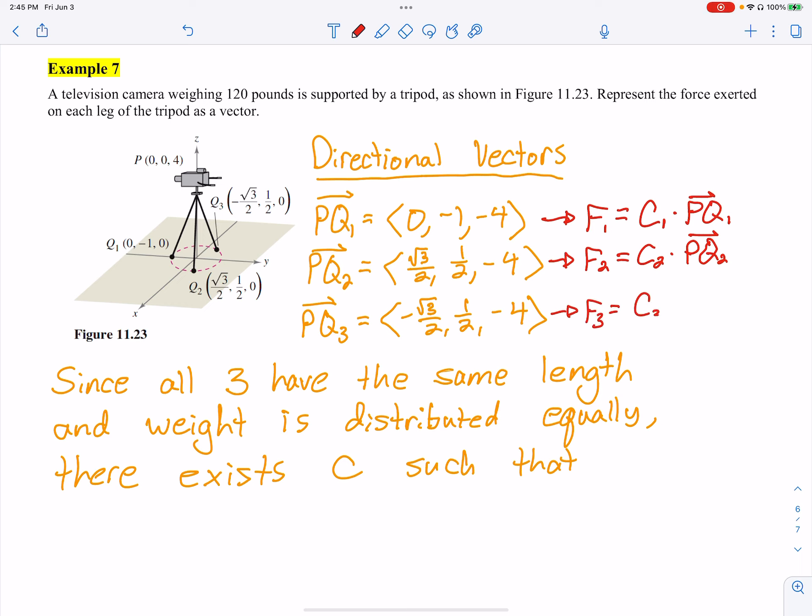All three tripods, I got some kind of force being put down in that direction. Now, since all three have the same length—PQ1, PQ2, PQ3, all those have the same length—and you can imagine they're going to be distributed equally, being three different ways, then that tells me that C equals C1, C2, C3. They're all equal.